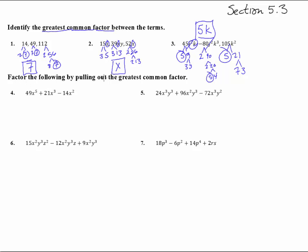Factor the following by pulling out the greatest common factor — so don't just find it, actually do some factoring. For 49x⁵, 21x³, and 14x², these are all multiples of 7, and the most x's common to all terms is x squared. So pull out 7x² and we're left with 7x³ plus 3x minus 2. You can double-check by multiplying back: 7x² times (7x³ + 3x − 2) gives 49x⁵ + 21x³ − 14x².